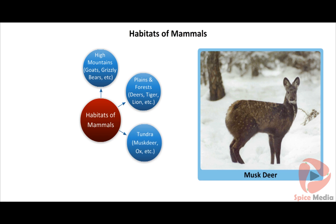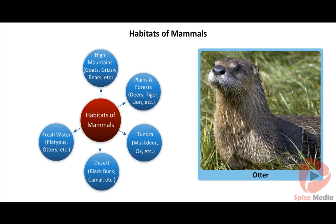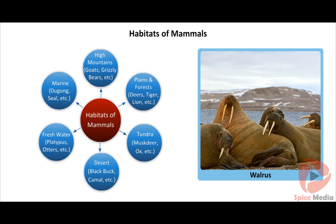Tundra is the zone for reindeer, musk deer, orcs, rodents, etc. Black buck, Indian wild ass, etc. fit into desert climate. Beavers, platypus, otters, etc. are semi-aquatic and choose the freshwater. Whales, dolphins, dugong, porpoise, seal, walrus, etc. are marine forms.